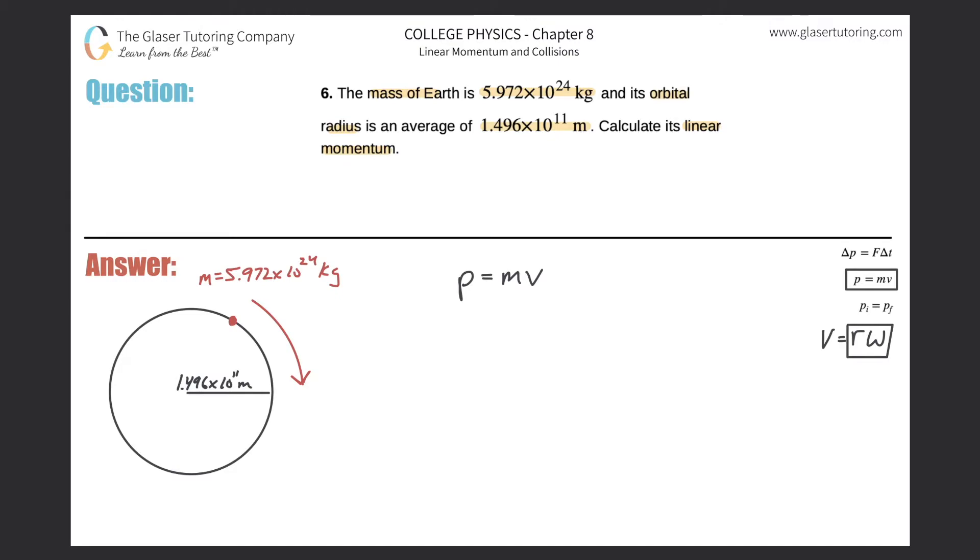So therefore what I'm going to do now is substitute in r omega for v in my formula here. So the momentum is equal to the mass of the object multiplied by the radius times the angular velocity. Now do we know the mass of the earth? Yeah, they gave it to us. Do we know the radius of the orbit? Yes we do, they gave it to us.